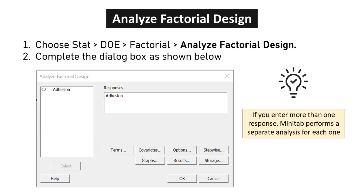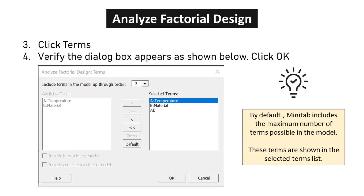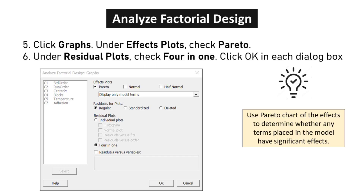Choose STAT > DOE > Factorial > Analyze Factorial Design. Complete the dialog box as shown. Click Terms and verify the dialog box appears as shown. Click OK, then click Graphs. Under Effects Plots, check Pareto. Under Residual Plots, check 4 in 1. Click OK in each dialog box.